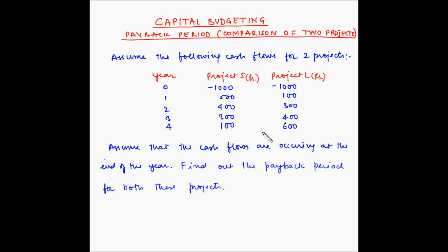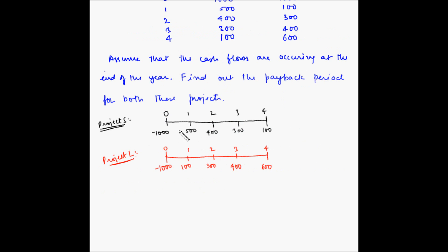Let's find the payback period for both these projects. Let us first draw the timeline for these two projects. Let us find the cumulative cash inflow for project S. At the end of the first year the inflow is 500 rupees. For the second year we get 400 rupees, so 500 plus 400 is 900. At the end of the third year we'll have 900 plus 300, which is 1200.